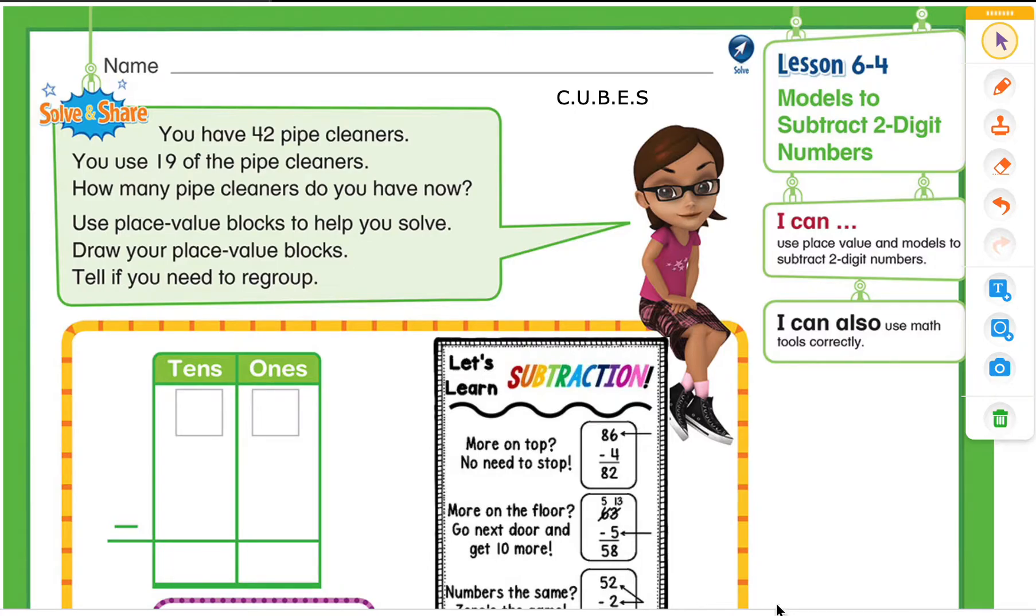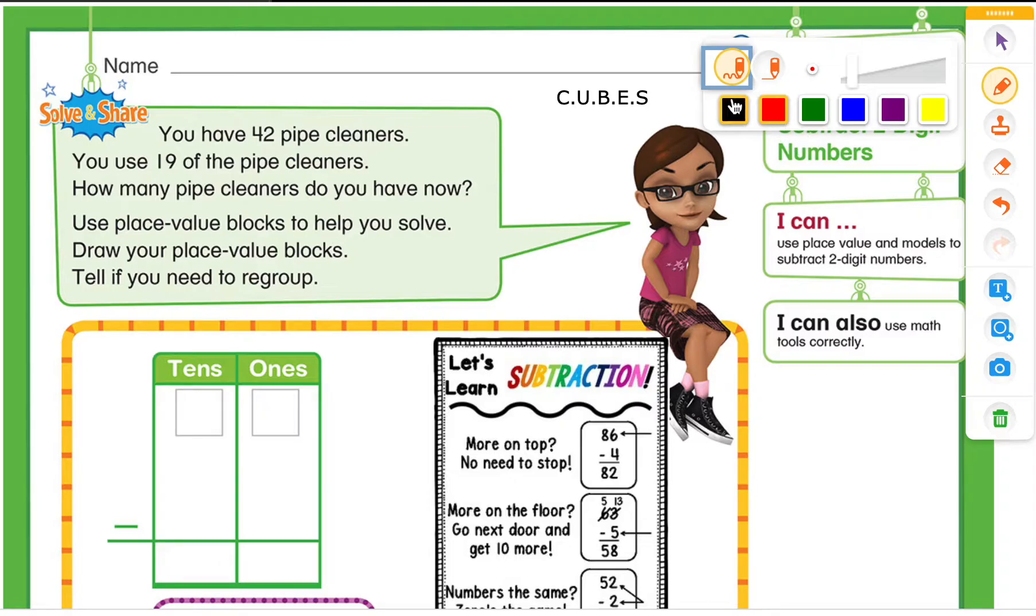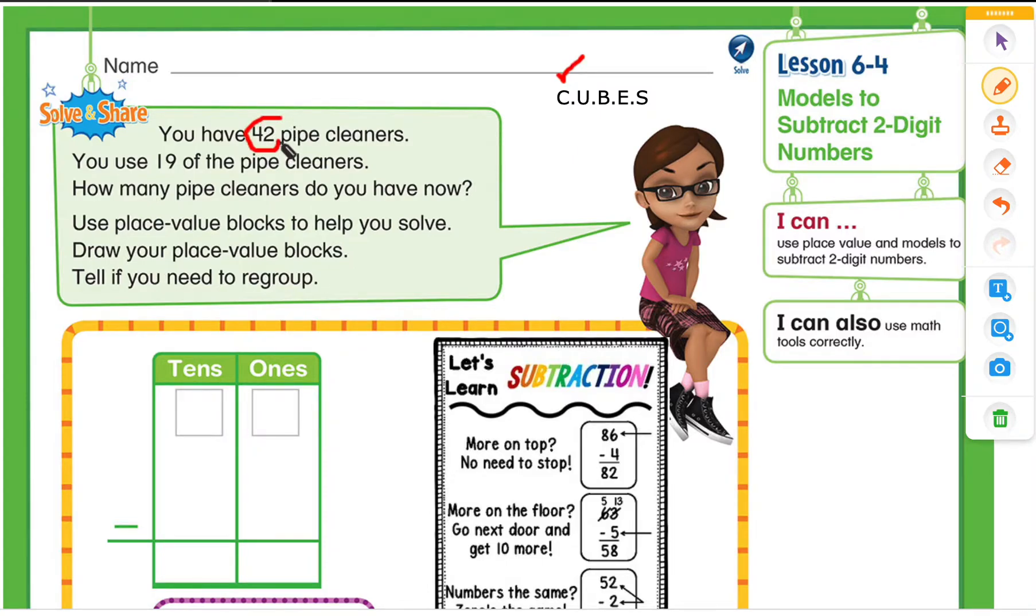So what we're going to do, we are going to use our CUBE strategy. Let's look at C. That means circle the key numbers. So we are going to circle our numbers, which are 42 and 19. Now U stands for underline the question. So we are going to see what the problem is asking for us to find. How many pipe cleaners do you have now? So before they had 42, but then they used 19. So we need to find out how many pipe cleaners do they have now.